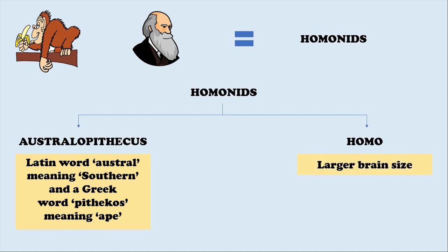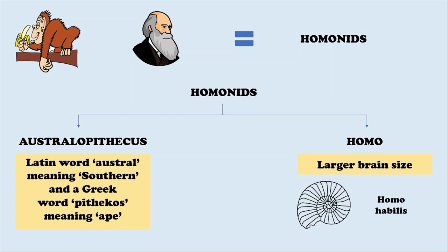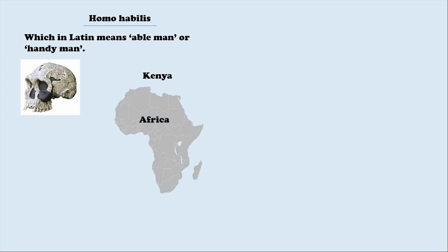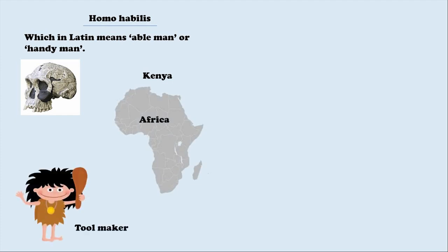One of the oldest fossils of the genus is that of the Homo habilis. With its larger brain size, Homo habilis — which is Latin meaning able man or handyman — has the oldest fossils found in Kenya in Africa. The Homo habilis was a tool maker.